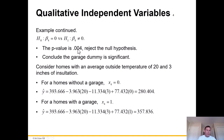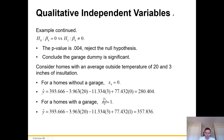The p-value for the garage was 0.004, which is under 0.05, so we reject the null hypothesis and accept the research hypothesis — the garage dummy variable is significant. For homes with an average outside temperature of 20 and three inches of insulation, plugging in 20 and 3 with zero for no garage versus one for a garage, you'll notice just how much difference there is with respect to heating costs.